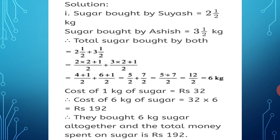Adding with the common denominator 2: 5 + 7 = 12 upon 2. 12 divided by 2 equals 6. So the answer is 6 kg. Total sugar bought by both is 6 kg.